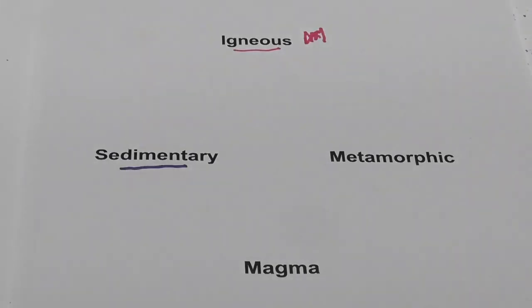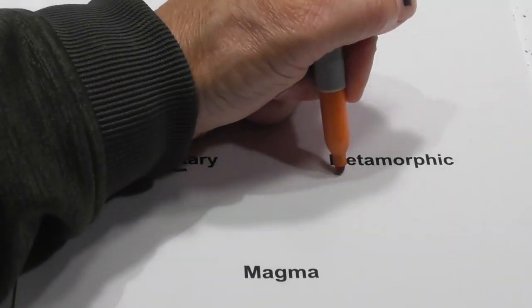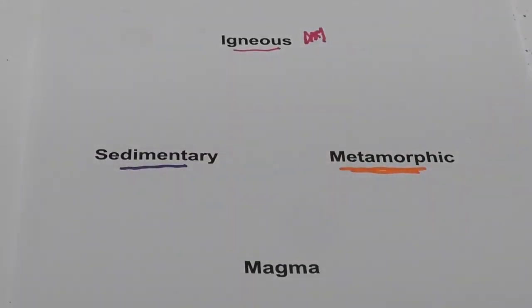And then we have metamorphic, which come under heat and pressure. So I'm going to underline these with orange for heat and pressure. And by the way, that is a terrible fire at the top for igneous.